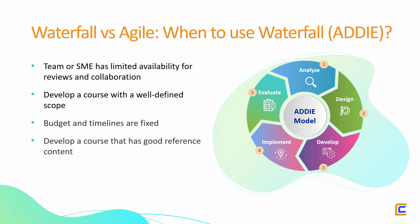Fourth, develop a course that has good reference content — if you have reliable source content and understand the scope and content well, you can stick to the waterfall model. Fifth, update an existing course — projects in which you are updating an existing course will have a clearly defined scope. Going Agile in such cases won't make sense, as your first iteration itself will meet the update requirements.